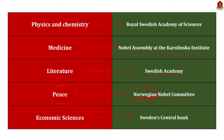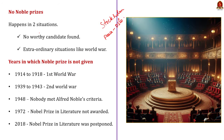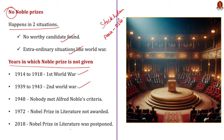Every year Nobel Prizes are awarded in Stockholm, the capital of Sweden, except the Nobel Peace Prize, which is awarded in Oslo, Norway — consistent with it being selected by the Norwegian Nobel Committee. The prize can be withheld if no worthy candidate is found or during extraordinary situations like world wars. For example, prizes were not issued during World War I (1914–1918) and World War II. The Peace Prize was not awarded in 1948, the Literature Prize not in 1972, and the 2018 Literature Prize was postponed due to a sexual harassment scandal within the Swedish Academy.